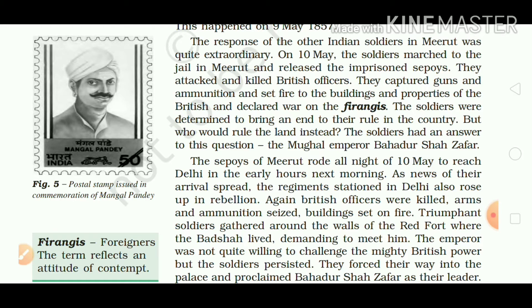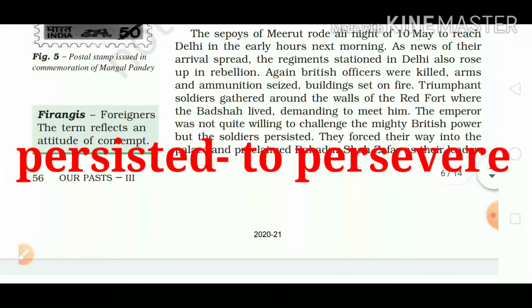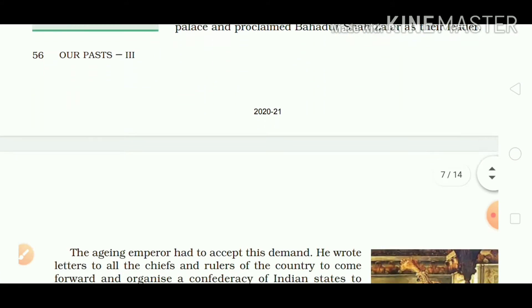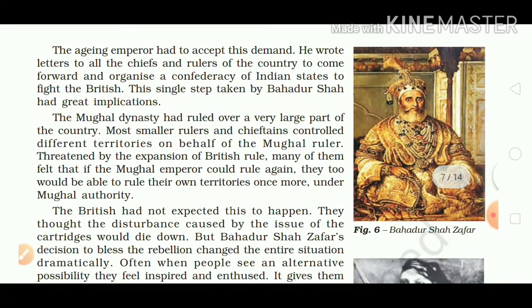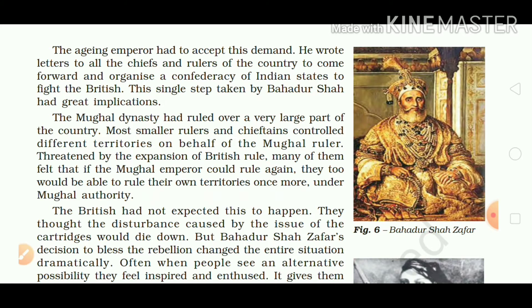The emperor was not quite willing to challenge the mighty British power, but the soldiers persisted. They forced their way into the palace and proclaimed Bahadur Shah Zafar as their leader. The aging emperor had to accept this demand. He wrote letters to all the chiefs and rulers of the country to come forward and organize a confederacy of Indian states to fight the British.